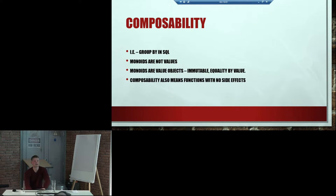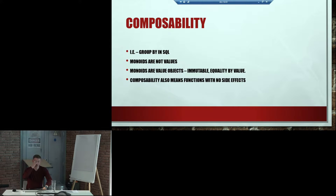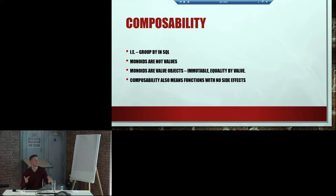Composability — so composability is about combining, like combining two glasses of beer. For example, GROUP BY in SQL. When approaching that, you need to think that monoids are not actually values — they're rather like value objects. They're immutable, they hold a particular value.